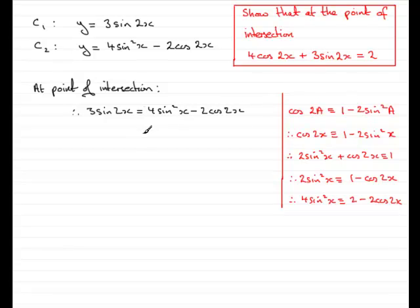So if we do that, we're going to have 3 sine 2x is equal to, in place of 4 sine squared x, I'm going to write 2 minus 2 cos 2x. Then we've got minus 2 cos 2x. So now I've got all the types of terms that I need. It's just a question of rearranging this to see if we can get this.